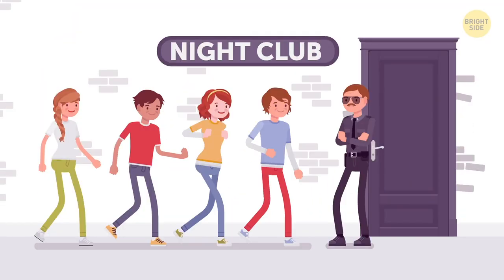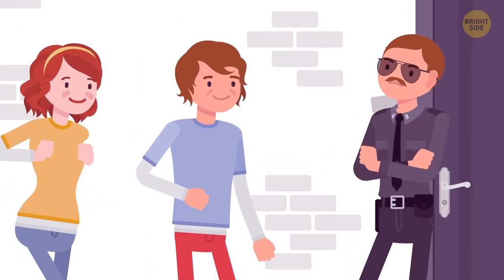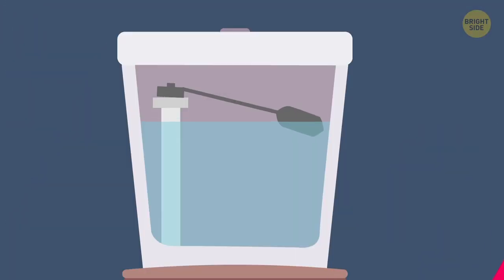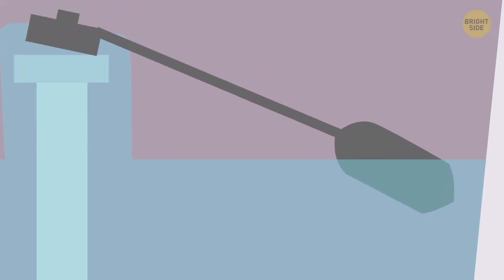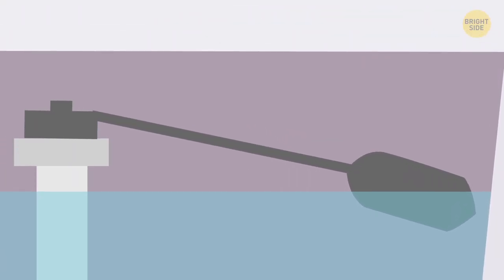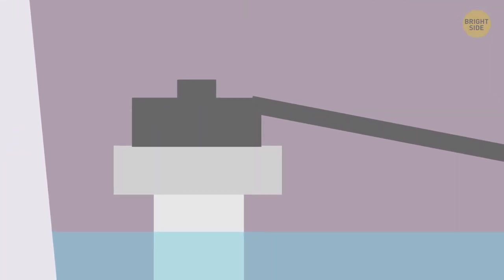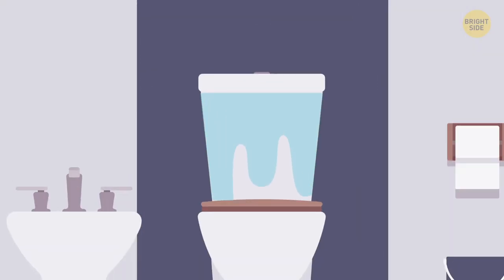The fill valve works a lot like a doorman at the club. It decides when there's enough water and stops more of it from getting in. When the tank empties, it lets new water in. There's also a float ball attached to the fill valve. When the water level rises, usually after you flush, this ball will go up with it. Once the water level gets to where it needs to be, a float rod attached to the ball pushes the fill valve so that extra water can't get in.